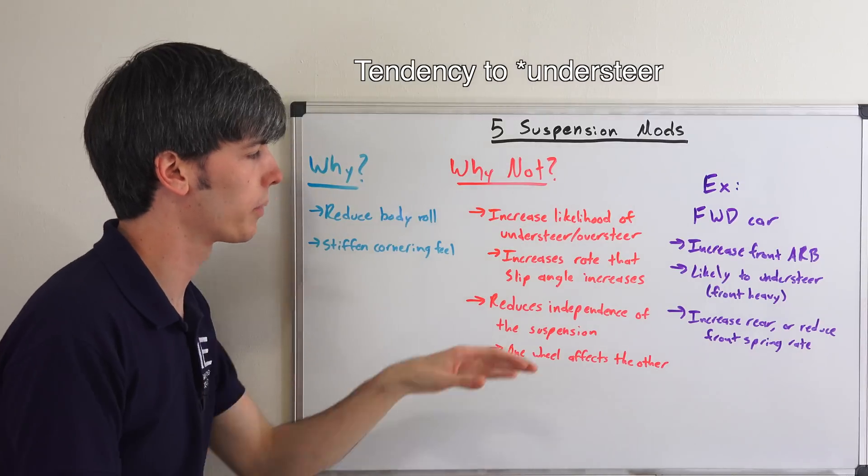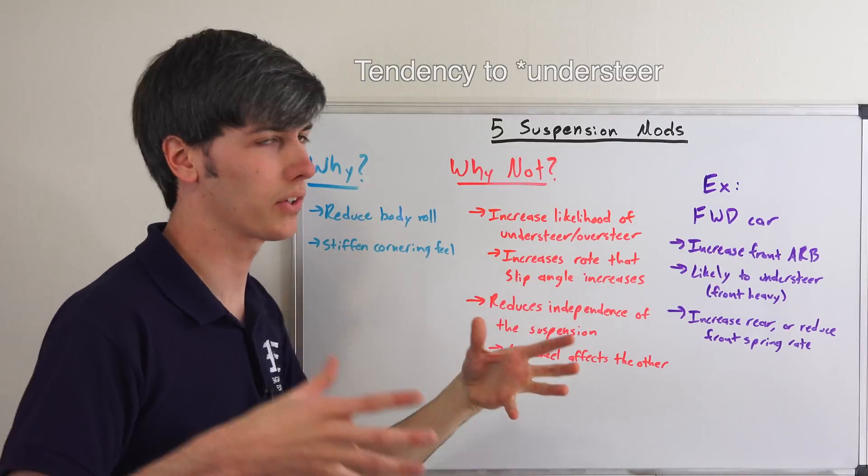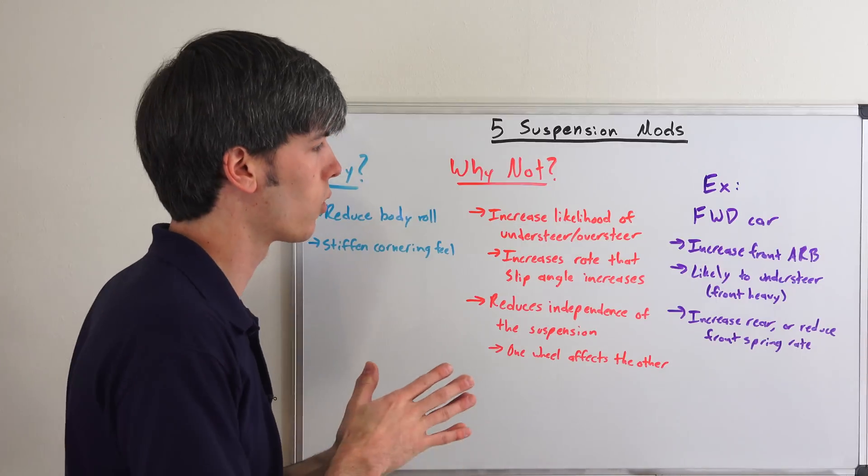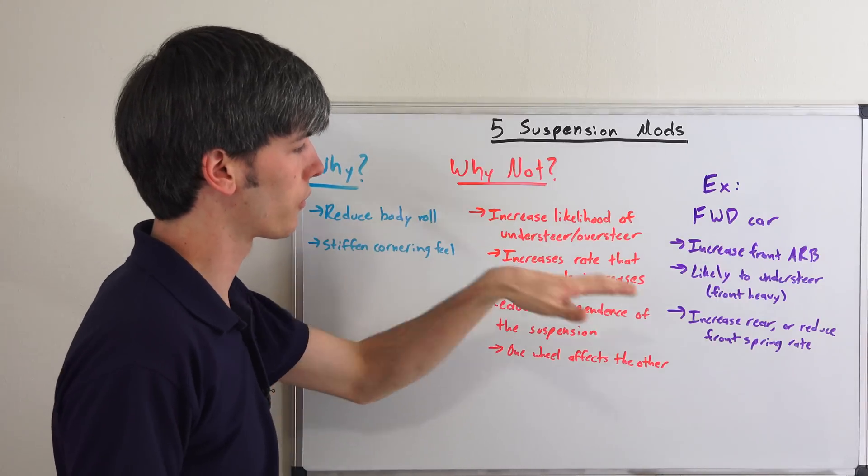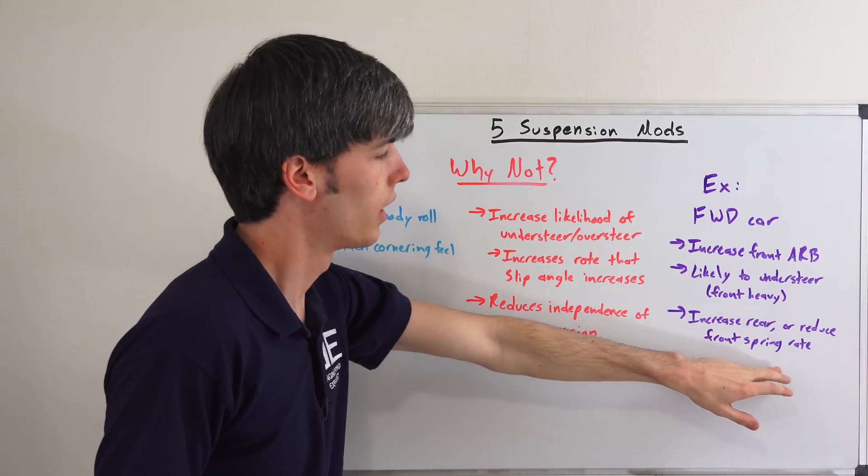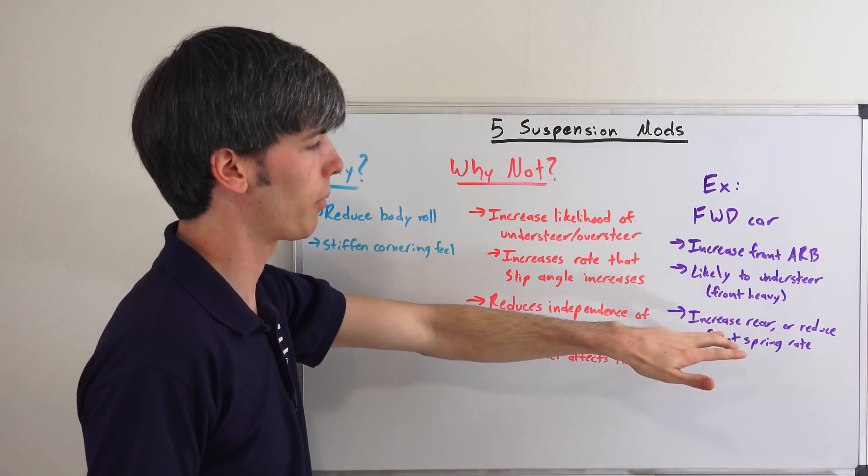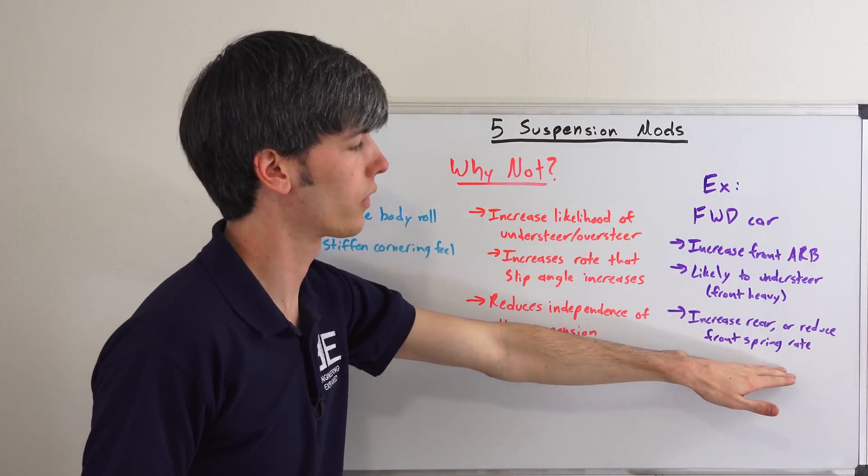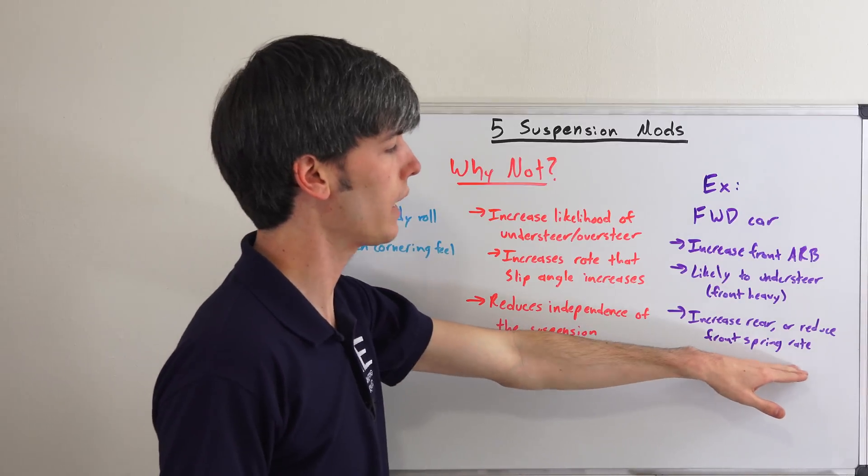Now you've put an anti-roll bar up front which gives it even more of a tendency to understeer because it increases the slip angle of the front tires as you go around a corner. So it's more likely for the front to lose grip. A smarter thing to do in this scenario would be to either increase the rear, but there you're kind of sacrificing grip overall, or to reduce the front spring rate if you can get away with it.